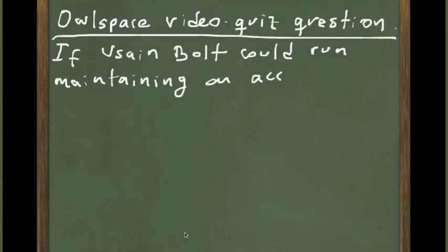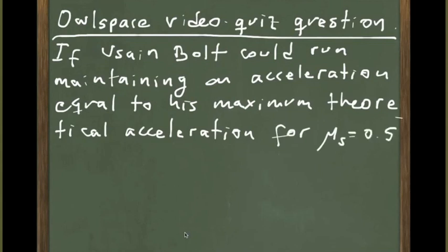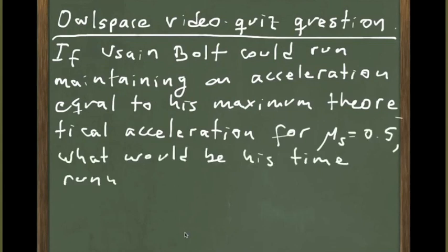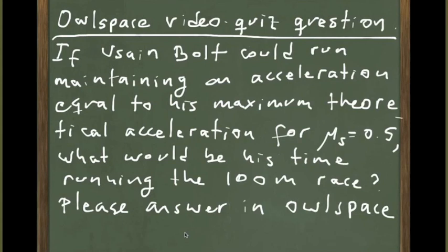Using this result, and just to make sure you're paying attention: if Usain Bolt could run maintaining an acceleration equal to his maximum theoretical acceleration for μs = 0.5, what would be his time running the 100-meter race? Please calculate this and answer in the response space.